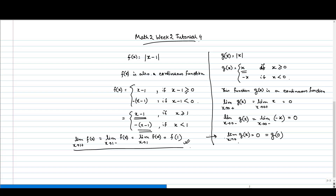Now, what about the differentiability? We will check through the definition of derivative. The limit of h tending to 0 of f(x plus h) minus f(x) divided by h — if this limit exists then the function is differentiable. For all other places it is obviously differentiable because x minus 1 is a linear function. So f'(x) is 1 if x is strictly greater than 1, and minus 1 if x is strictly less than 1.